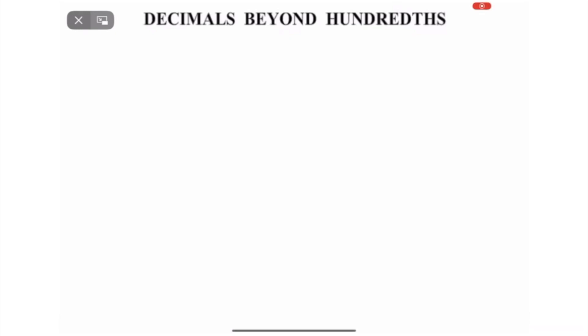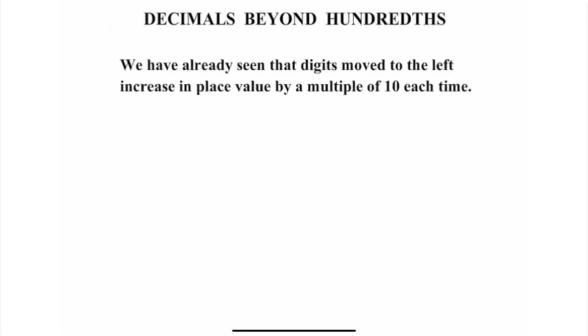Now in this lesson we take a look at decimals beyond hundredths. We have already seen that digits moved to the left increase in place value by a multiple of 10 each time. For example, we have the number 2 there, simply that's just 2 units or 2 ones. If we put the 2 there but move it to the left, put a zero there, now we've got 2 tens. We've got 20 there.